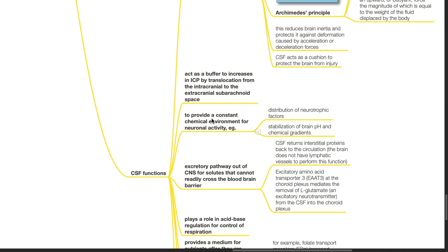CSF also provides a constant chemical environment for neuronal activity. For example, CSF partakes in the distribution of neurotrophic factors and stabilization of brain pH and chemical gradients.